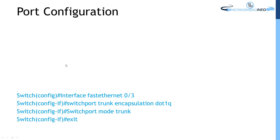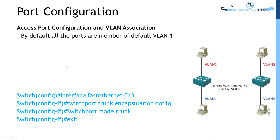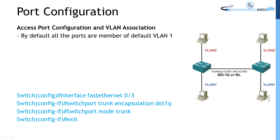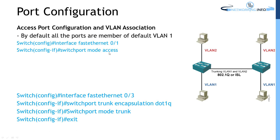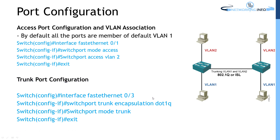After creating VLANs, we need to convert ports either into access or trunk mode. To configure an access port, the port should be connected to an end device such as a PC or router. Use the interface name, set the port mode to access or trunk, and associate it with the desired VLAN. For trunk configuration, define the encapsulation method — either ISL or 802.1Q — then set switchport mode trunk and exit.